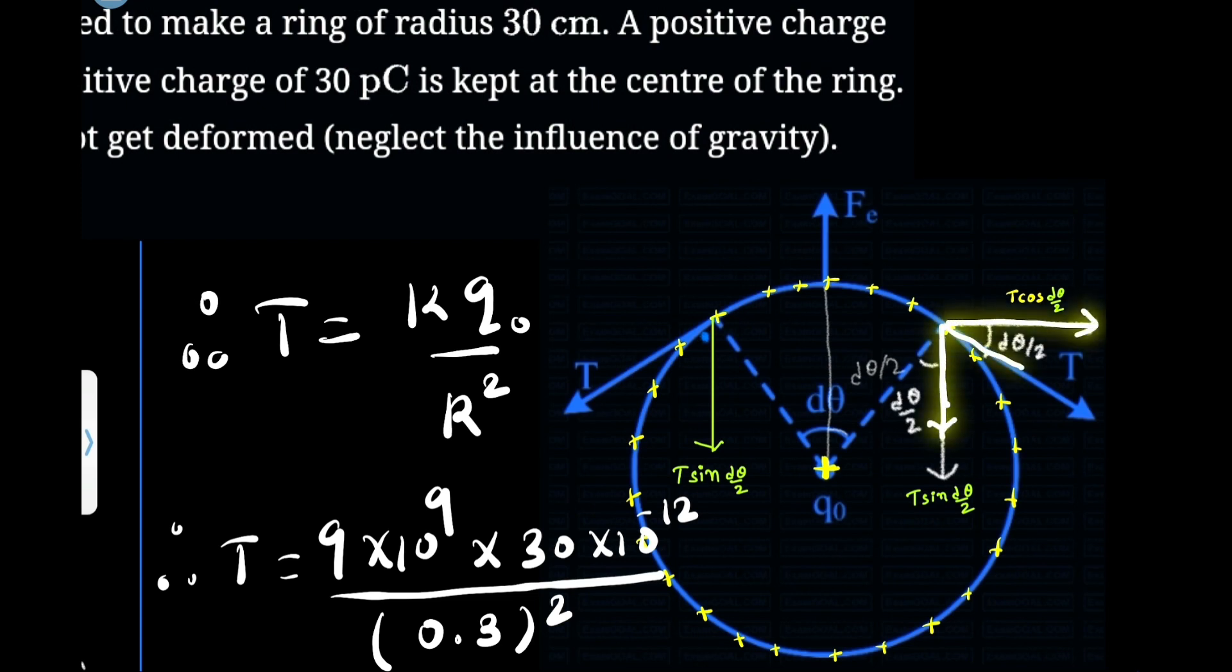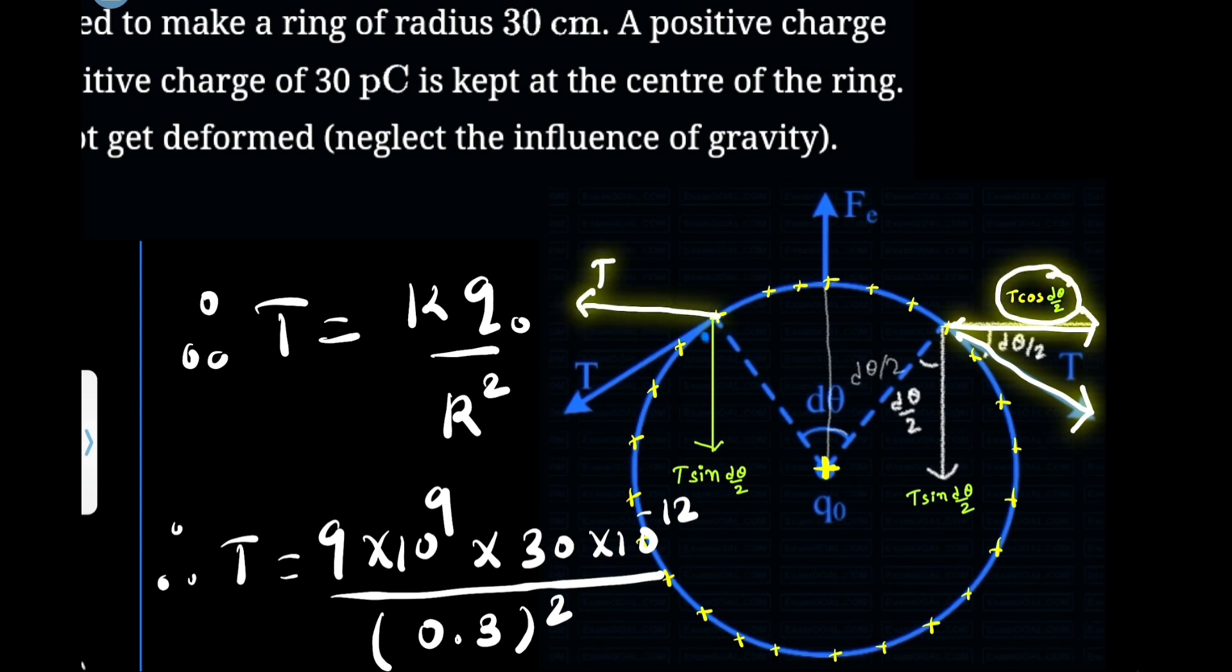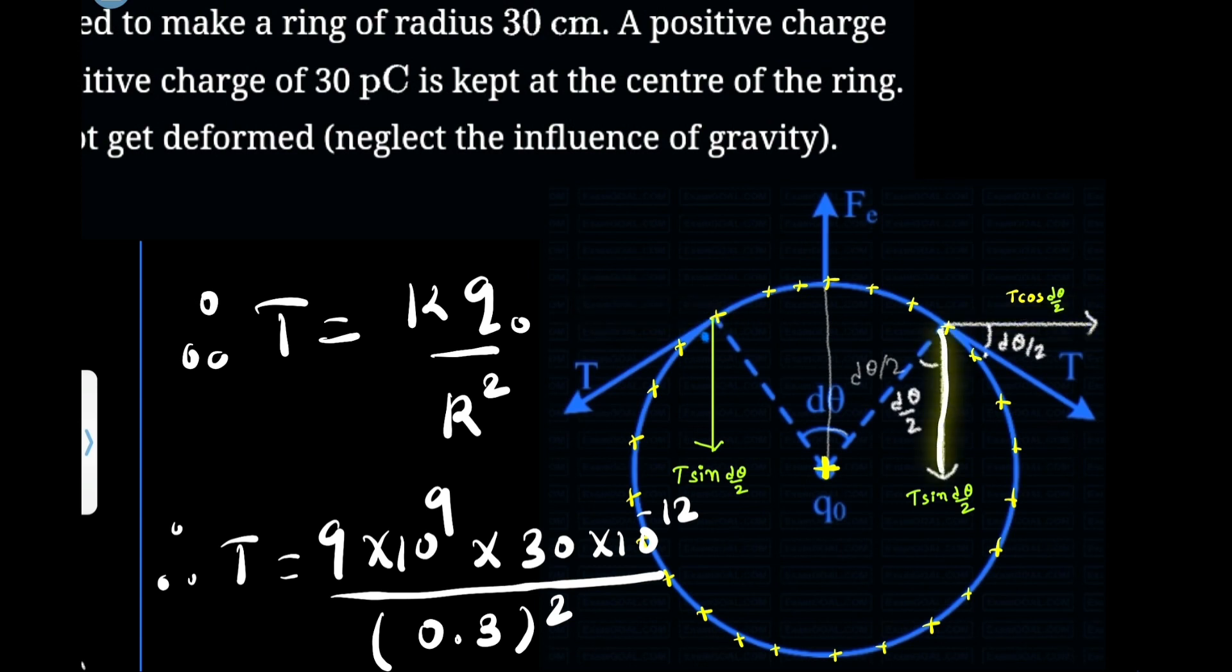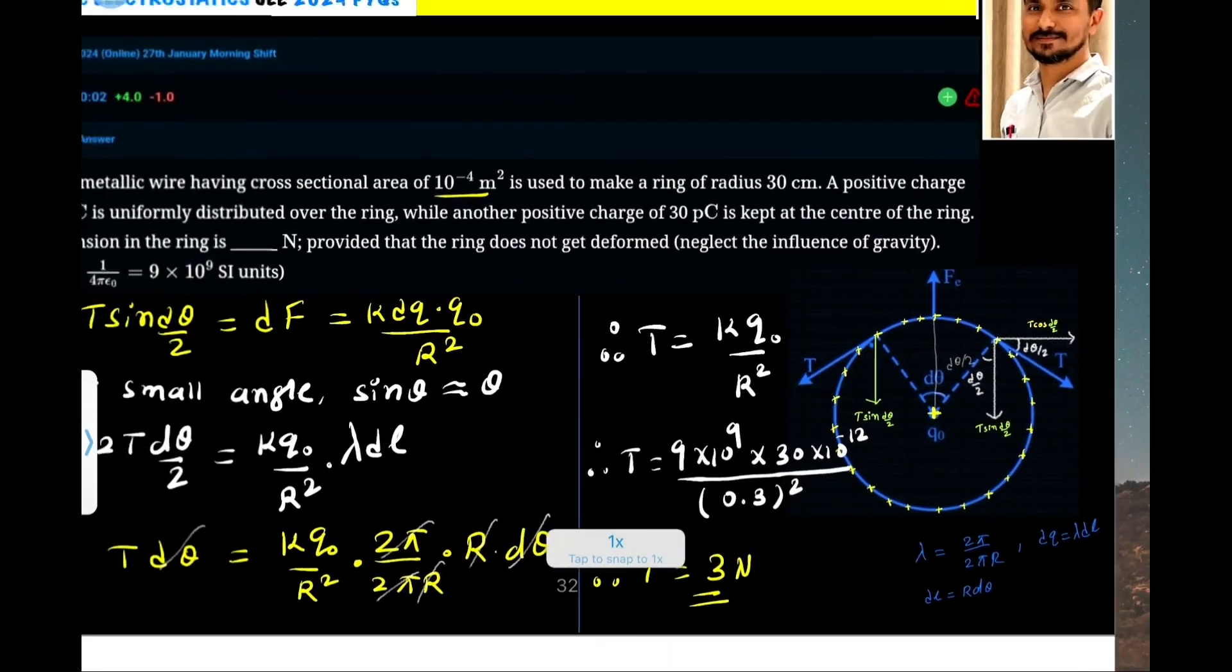Now again, you can see these two are perpendicular. So if this part is 90 - dθ/2, then this part of course is dθ/2 because the whole angle is again 90. So that is why if this is the tension, then this component of the tension is T cos(dθ/2). Similarly here, the angle is dθ/2. So this T cos(dθ/2) and T cos(dθ/2) will cancel each other. Now this component T sin(dθ/2) and T sin(dθ/2) on either side of the arc will balance this electrostatic force.